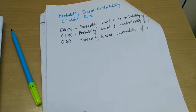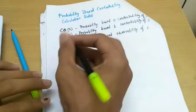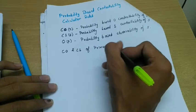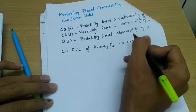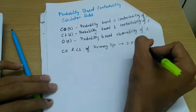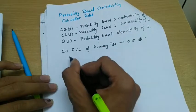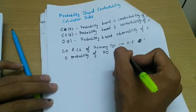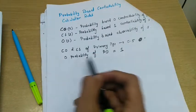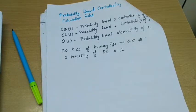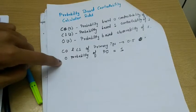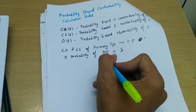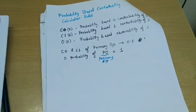Similar to scope-based analysis, we have boundary conditions. We will initialize C0 and C1 of primary inputs to 0.5, and the observability of the primary output is set to 1. This is the observability of the primary output, where PO denotes the primary output.